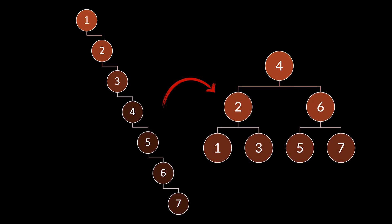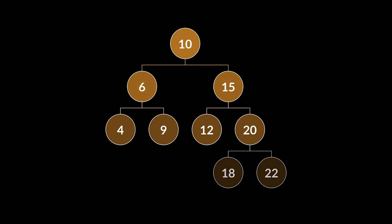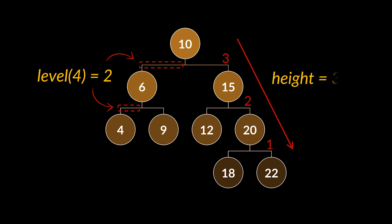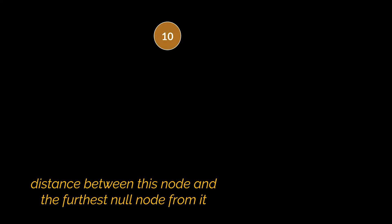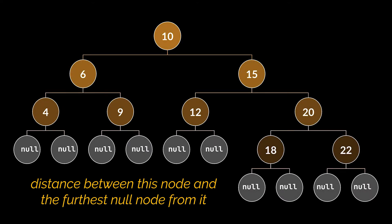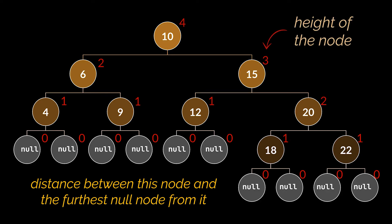Before diving into how nodes are moved around, let's see when a tree or node is said to be unbalanced. The level of a node is the number of edges between the root node and that node, and the height of the tree is the maximum level found inside it. The height of a node is the distance between the node and the furthest null node from it. A leaf node has height one, a null node has height zero.